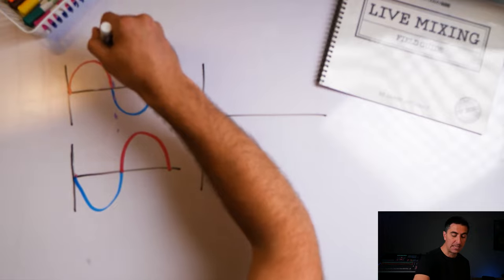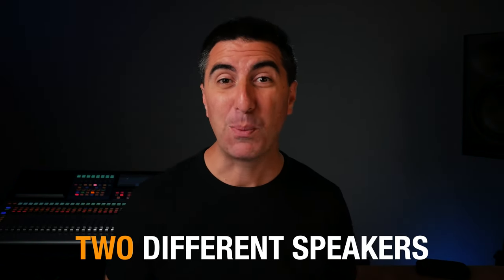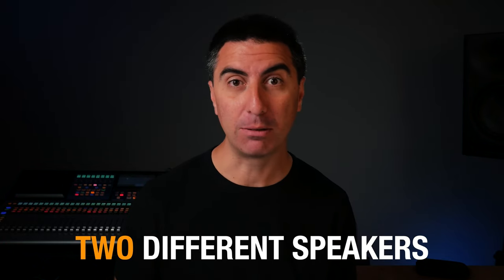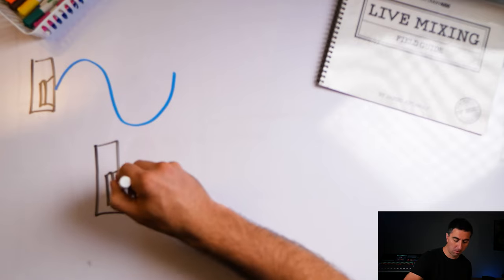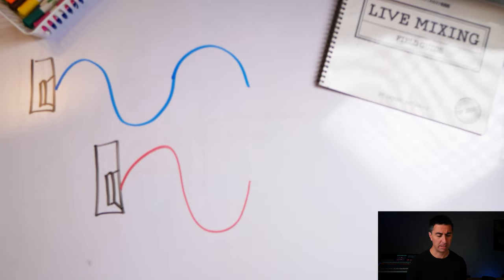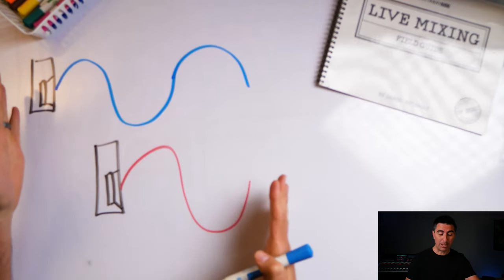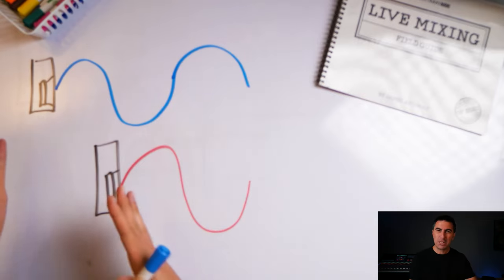The 180-degree line of one wave is at the same point as the zero line of the other. This timing difference can happen from two microphones on the same sound source, or if you're hearing both the direct sound and a reflection — if they arrive at different times, they can cancel each other out. Now let's look at how this might happen with two different speakers. Imagine two speakers producing the exact same signal, but one is offset by distance, so the waves start combining at a different phase.